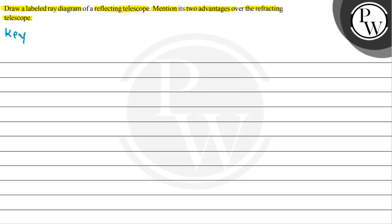So before we begin, let us talk about the key concept which we are going to use here for this question. The key concept is about a reflecting telescope. So let us draw the labeled ray diagram for this reflecting telescope.